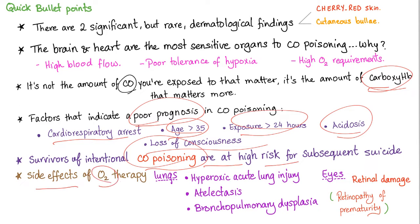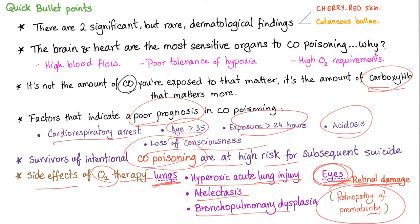Side effects of oxygen therapy in the lungs include hyperoxic acute lung injury, atelectasis (collapse), and bronchopulmonary dysplasia. In the eyes, oxygen toxicity can cause retinal damage and retinopathy of prematurity in young infants.